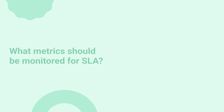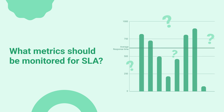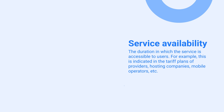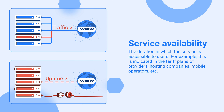What metrics should be monitored for SLA? The types of SLA metrics required will depend on the services being provided and usually include: service availability — the duration in which the service is accessible to users. For example, this is indicated in the tariff plans of providers, hosting companies, mobile operators, etc.